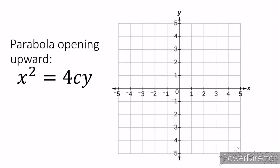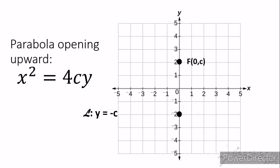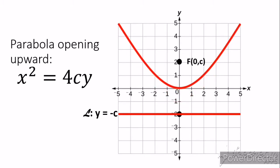The equation of a parabola opening upward is x squared is equal to 4cy. Remember, we have x squared is equal to 4cy. If we look at the figure, we have a focus with coordinates 0 and c — or in this graph, coordinates 0 and 2. And then, a directrix with an equation of y is equal to negative c, or in the figure, y is equal to negative 2. The directrix is actually a line.